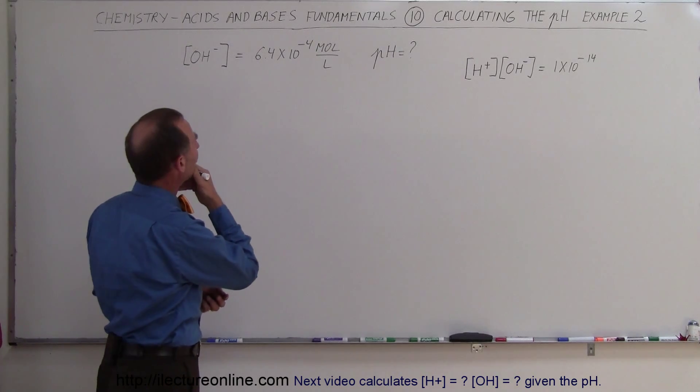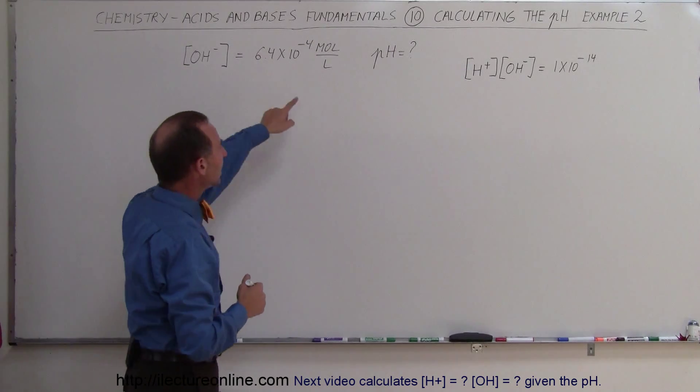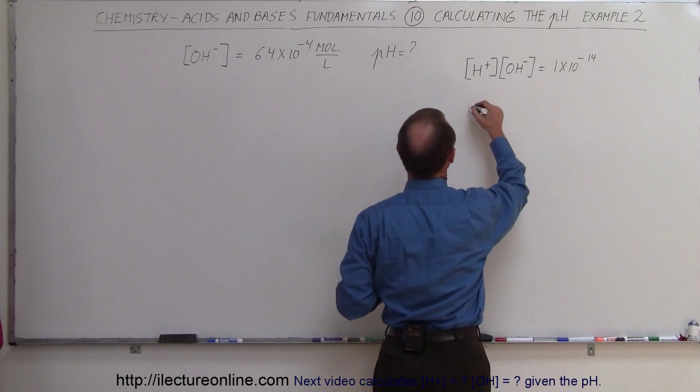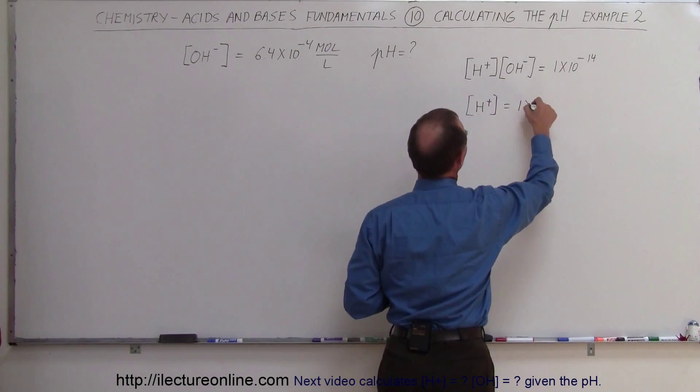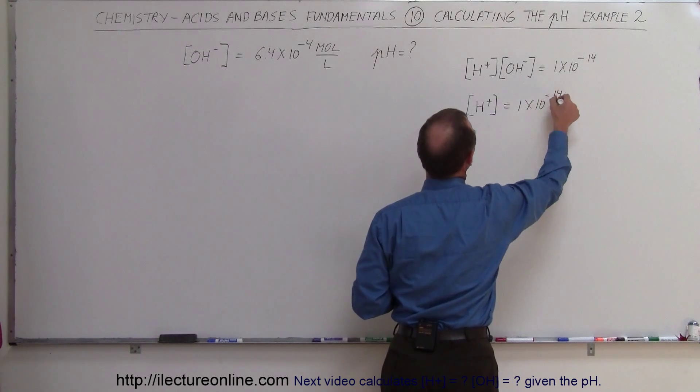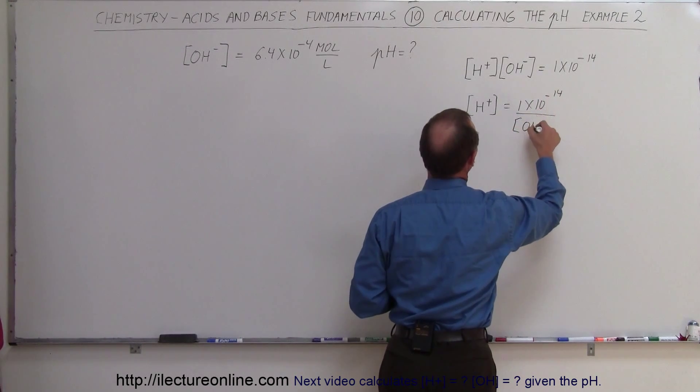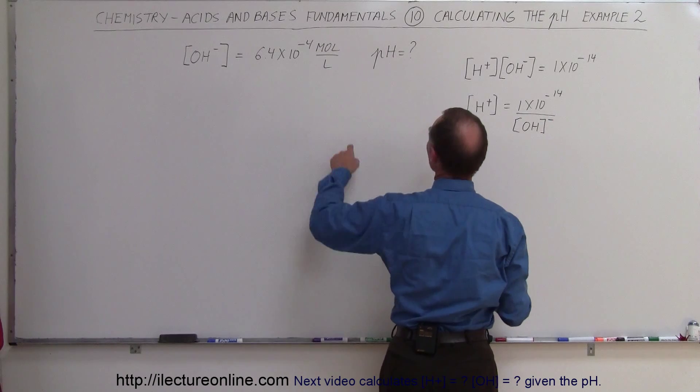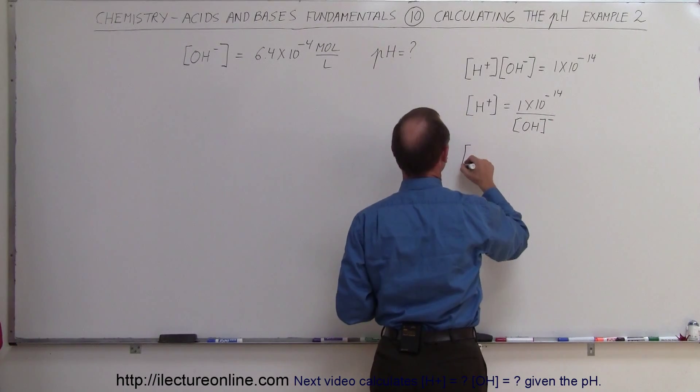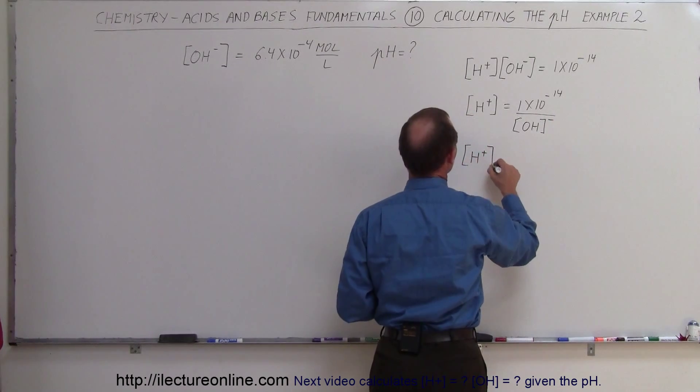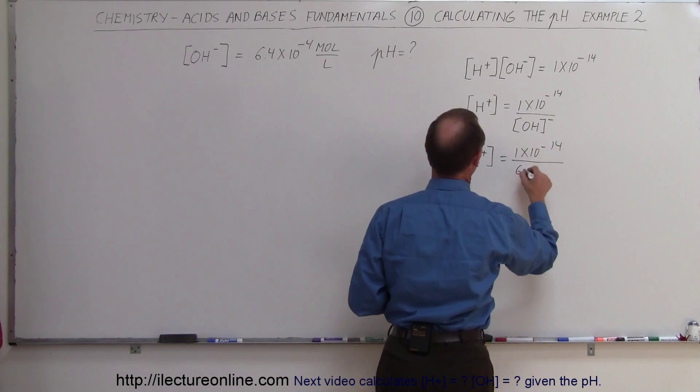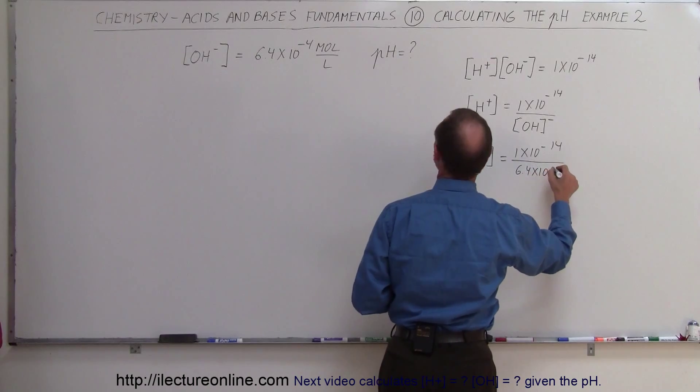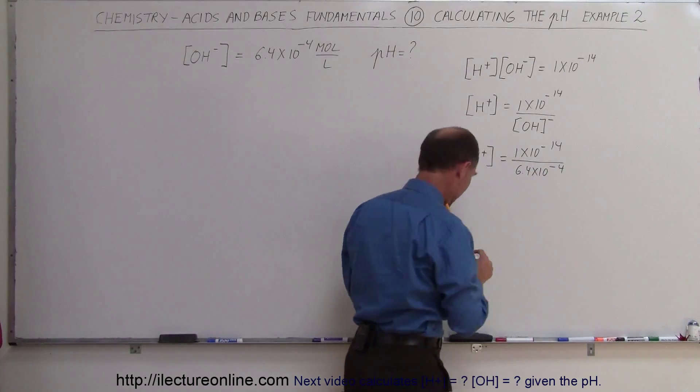So therefore, what we're going to do is we're going to solve for the concentration of the hydrogen ion by saying the concentration of the hydrogen ion is equal to 1 times 10 to the minus 14 divided by the concentration of the hydroxide ion. Since that was given to us, we can say therefore that the concentration of the hydrogen ion is equal to 1 times 10 to the minus 14 divided by 6.4 times 10 to the minus 4.